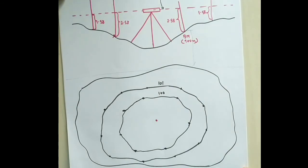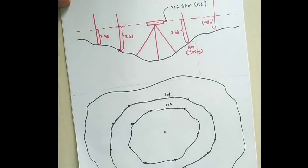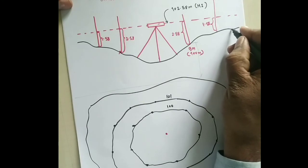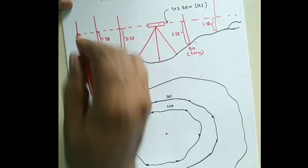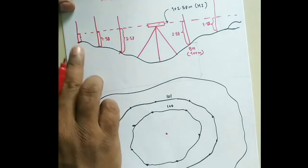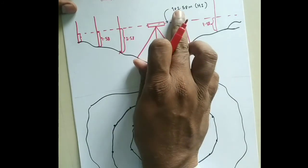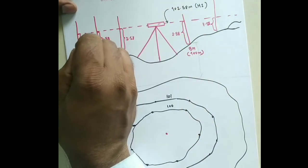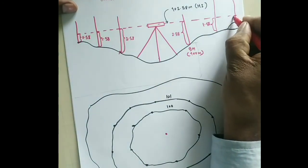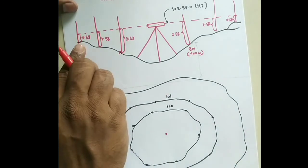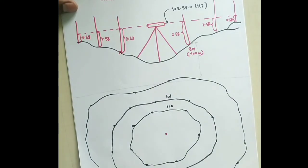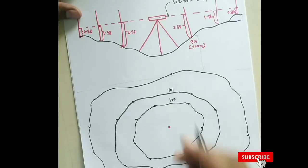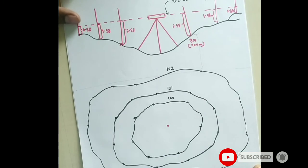Similarly, to plot the 102-meter contour, I calculate: 102.58 - 102 = 0.58 meters. I find points on the ground where the staff reading is 0.58, mark those points, and trace the contour line through them. This gives me the 102-meter contour. So this top view now shows the contour lines for 100, 101, and 102 meters.